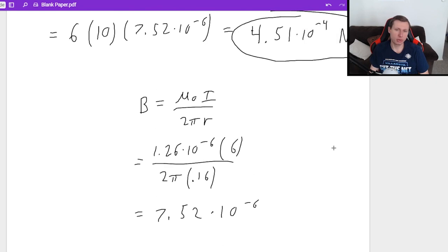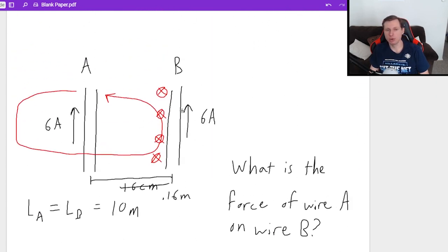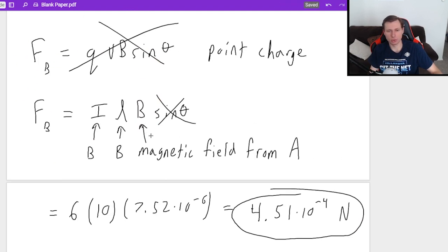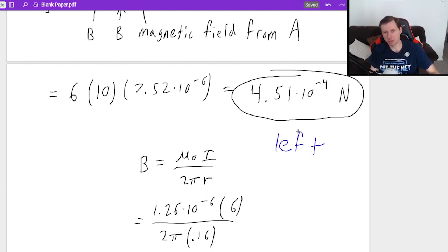And since we want to know the direction at point B, I'm going to do it for point B. So it looks like my thumb points up because my current points up. It looks like my index finger points into the page because that's the direction of the magnetic field. As you can see by my red circles with the X's in them, that's into the page. And then half extend your middle finger. It looks like the force will be pointing to the left. In other words, this wire B wants to go towards wire A.